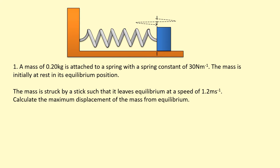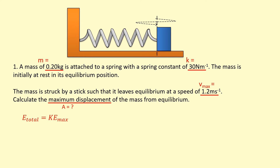In this example, we have a mass of 0.20 kg attached to a spring with a spring constant of 30 N/m. The mass is initially at rest at its equilibrium position and is struck so that it leaves the equilibrium at a speed of 1.2 m/s. This is v_max, since it's moving fastest at the equilibrium. To find the total energy: ½mv²_max = ½ × 0.2 × 1.2² = 0.144 joules.